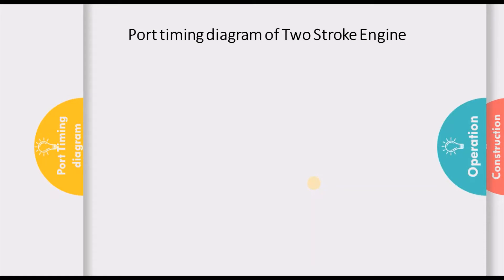Now let us discuss what we call the port timing diagram. The exhaust port and the inlet ports are opening and closing as the piston moves up and down. The graphical representation of the timing of the opening and closing of the ports and valves in a two-stroke engine is shown on a polar diagram. This particular graphical representation is what we call the port timing diagram.